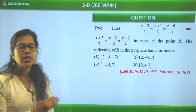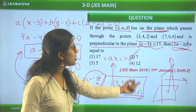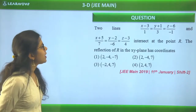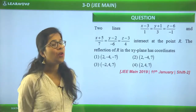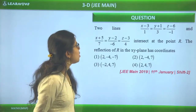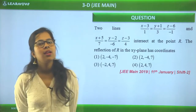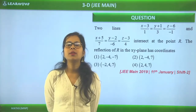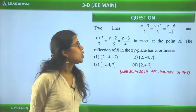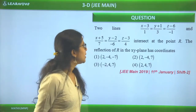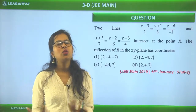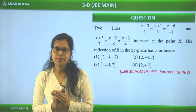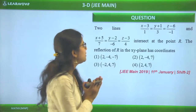Next question from 11th January Shift 2: Two lines are given that intersect at point R. The reflection of R in the XY plane has what coordinates? A very simple question — simpler than the previous one. First find the point of intersection of the two lines.